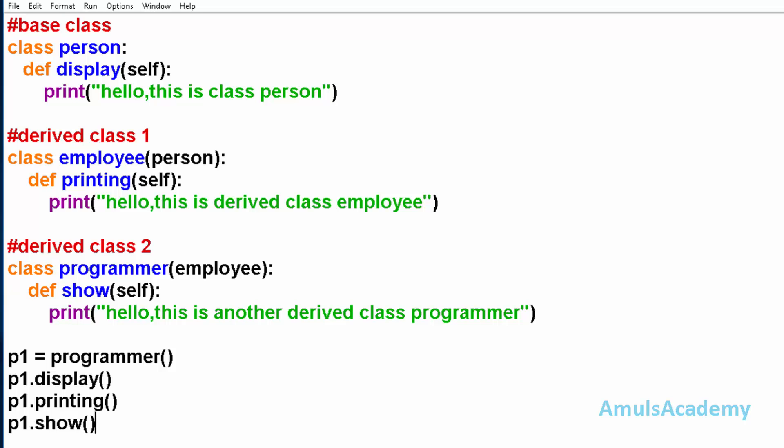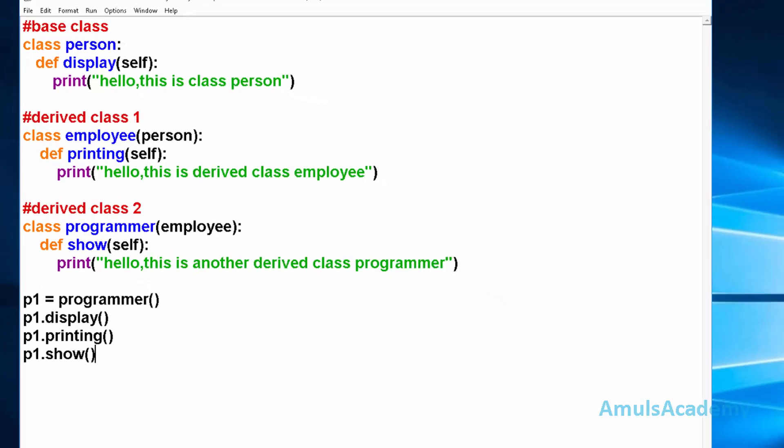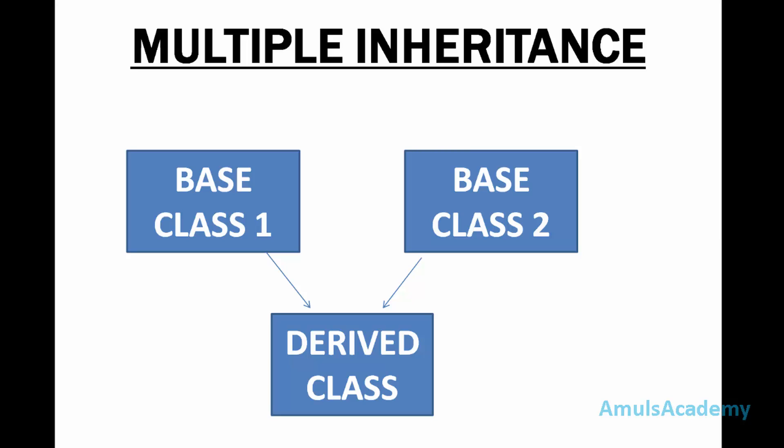That covers multilevel inheritance. Next is multiple inheritance. In multiple inheritance there will be more than one base class. For example, here we can see base class one and base class two, and by using these two base classes we are deriving a new class. If a new class is derived from more than one base class then it is called multiple inheritance.